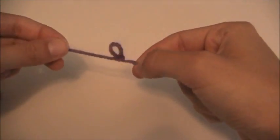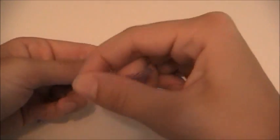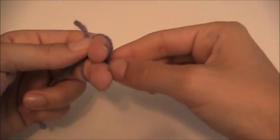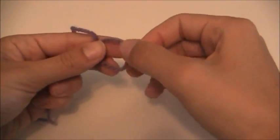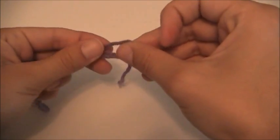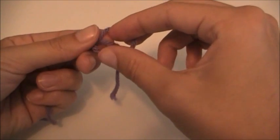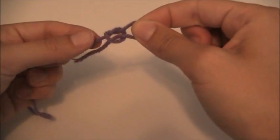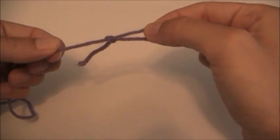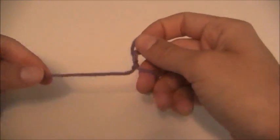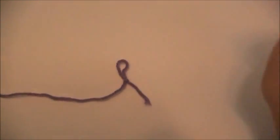If I want to make the slipknot disappear, I just pull. Show you that one again. Wrap the yarn around. I'm going to pull off the loop and then I'm going to stick the yarn through the loop. I'm going to hold onto the loop, the yarn and pull through. And there's our slipknot.